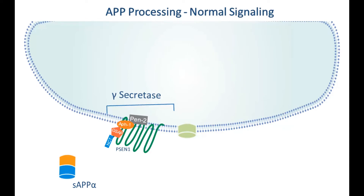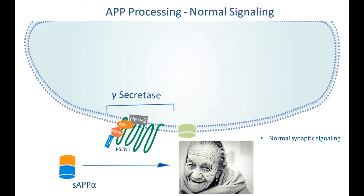It's also important to note that SAPP alpha gets secreted from the neurons and drives normal synaptic signaling, leading to synaptic plasticity, learning, memory, neuronal survival, and emotional behaviors.